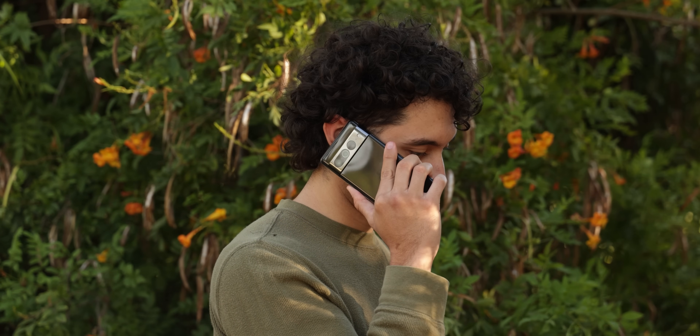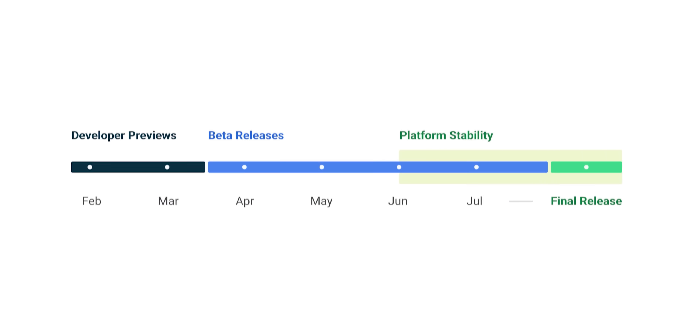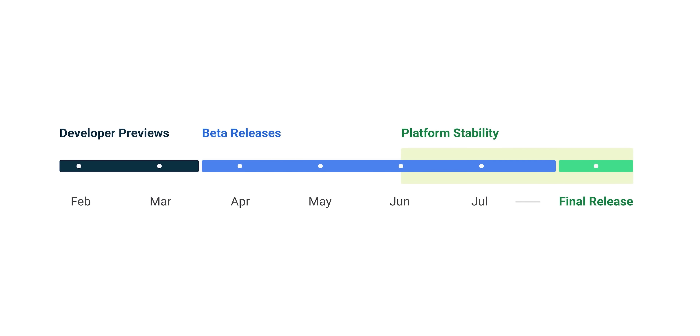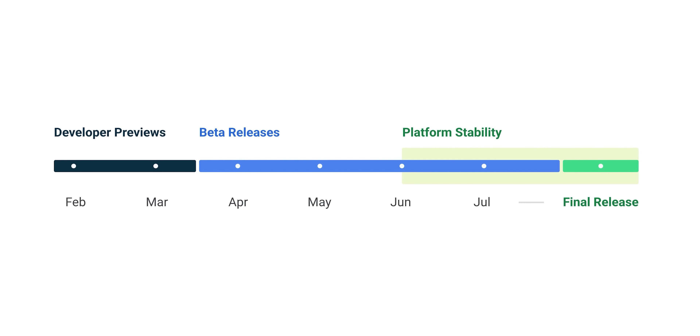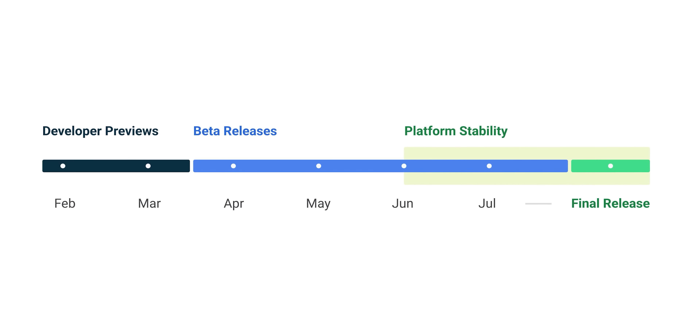That's basically it for this Android 14 Beta 1 update. As you can tell, it's kind of a letdown. I was hoping for something bigger and exciting since we're now stepping into the beta releases, but so far it's just a few minor features and changes. They should really just call this update Android 14 Developer Preview 3, but I'm still hopeful because there are about four more beta updates being released every month until August.